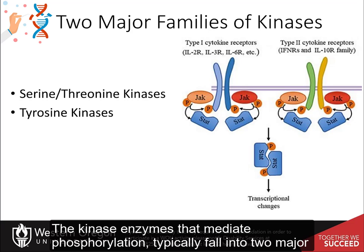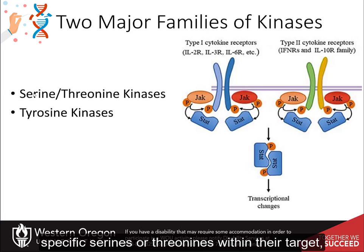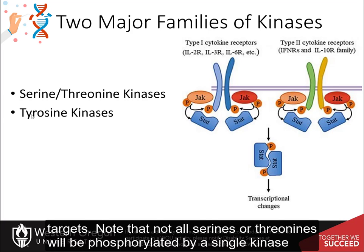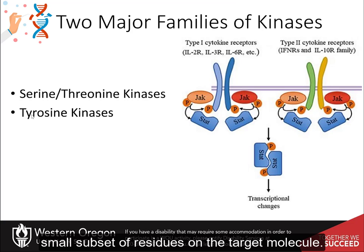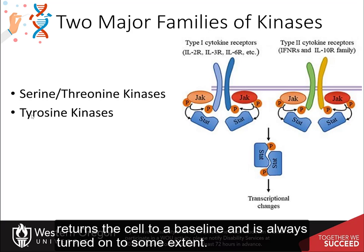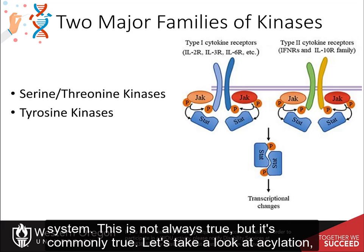Kinase enzymes that mediate phosphorylation typically fall into two major classes based on their substrate target. Serine-threonine protein kinases phosphorylate specific serines or threonines within their target, whereas tyrosine kinases preferentially phosphorylate tyrosine residues. Kinases have high specificity for their target molecule and a small subset of residues on that target. Phosphatase enzymes show less substrate specificity than kinases, suggesting that dephosphorylation returns the cell to a baseline and is always turned on to some extent, whereas kinases become active for short bursts of time.